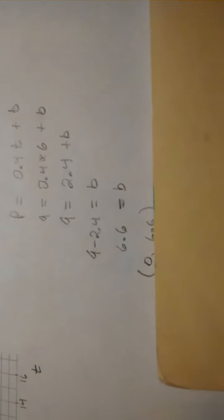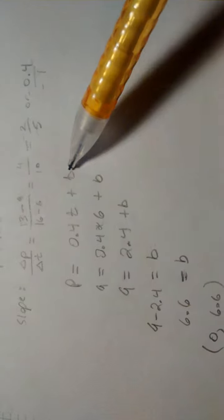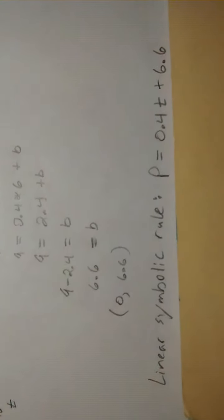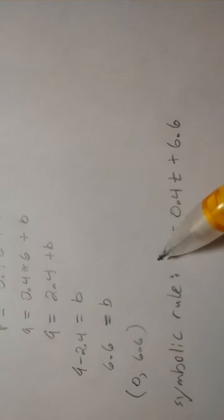So our vertical intercept is actually 0, 6.6, and in our symbolic rule, that guy must be 6.6. So there's our symbolic rule right there. In all of its glory.